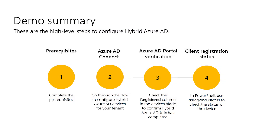Thanks, Juan. So just to review the steps involved, Juan completed the necessary prerequisites and configured Azure AD Connect. Then he verified that the device was successfully registered by going to the Azure AD portal and checked the registered column. Finally, using the DSREG CMD command prompt, Juan was able to check the status of the device. That's it for today. Thank you very much. We hope you find this video useful. Please see the description below for further resources.